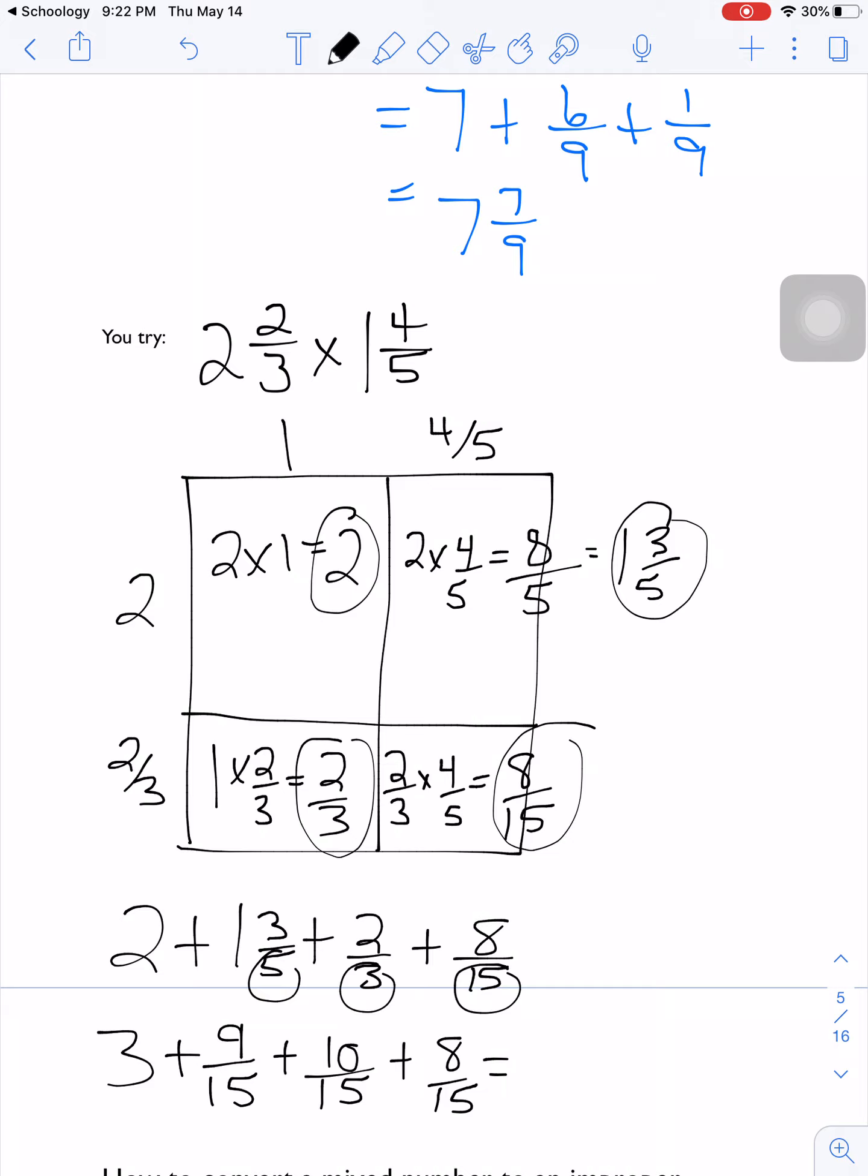So when I add those fifteenths together, I have 9 plus 10 is 19 plus another 8 is 27/15. That means there's another whole in there, so I'm going to have 4 wholes. When I take 27 minus 15, I'm left with 12/15 left over. And 12/15 can be put into lower terms. I'm going to end up with 4 and 4/5 is my final answer.